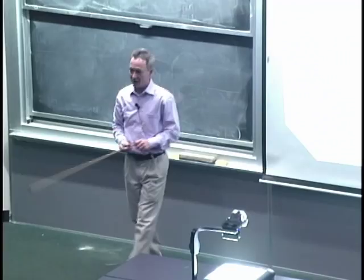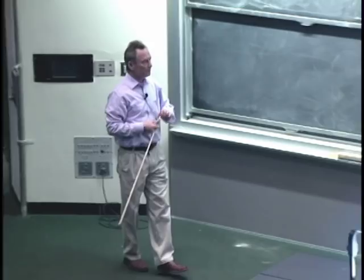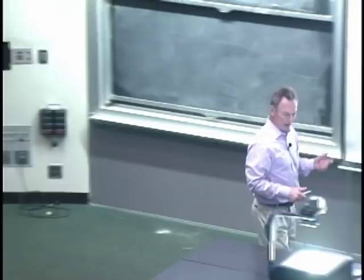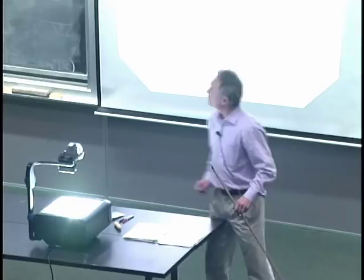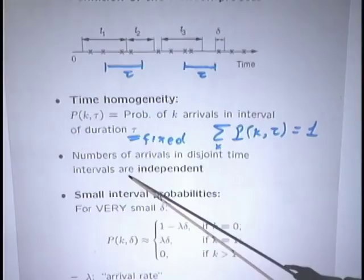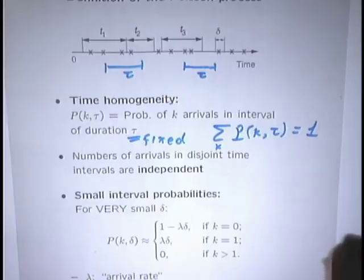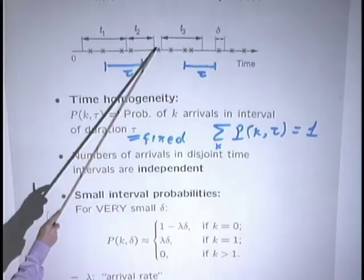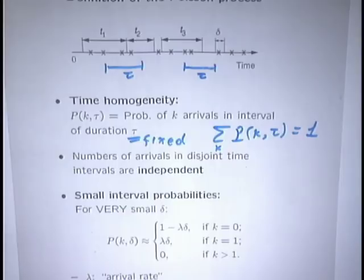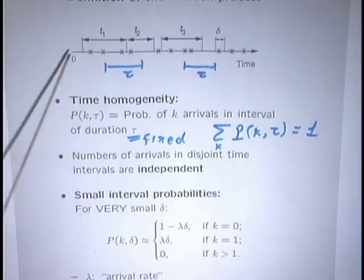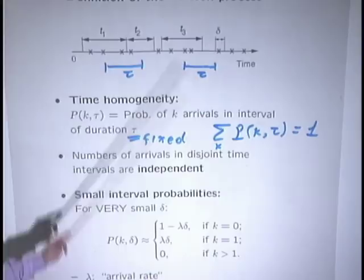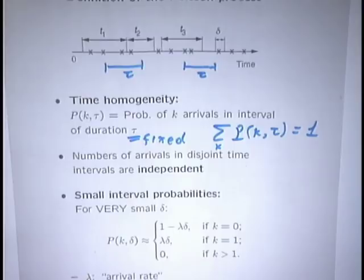The second assumption is that disjoint time intervals are statistically independent. The number of arrivals in one interval is independent of the number of arrivals in any other non-overlapping interval. This is the continuous-time analog of the Bernoulli assumption that different time slots are independent of each other.